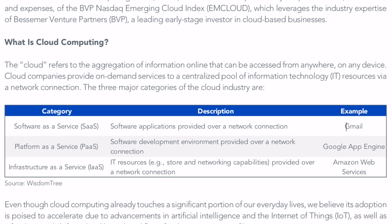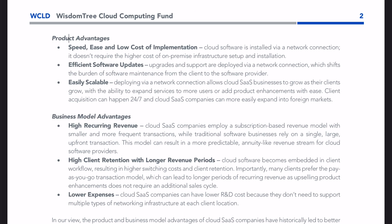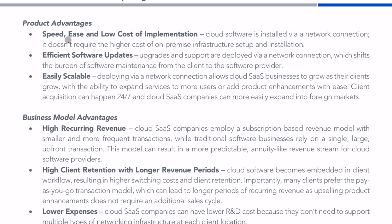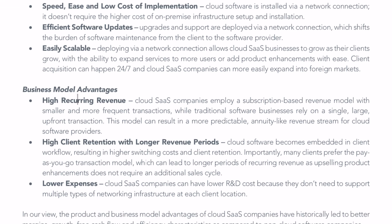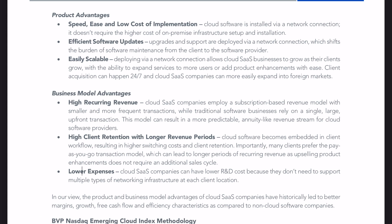They give examples: Gmail, Google App Engine, and AWS. The product advantages of cloud computing include speed, ease, and low cost of implementation, efficient software updates, and easy scalability. On the business model side: high recurring revenue because most SaaS products use a subscription-based model; high client retention with long revenue periods, because once you sign up you tend to stay signed up; and low expenses because it's all stored on the cloud. Clients can simply change their subscription package if they want more or less access.